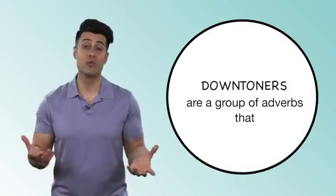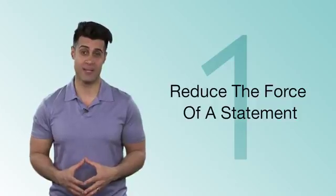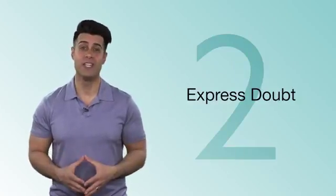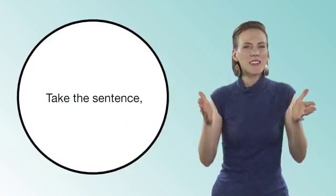Downtoners are a group of adverbs that, one, reduce the force of a statement, two, express doubt, or three, show imprecision. Take the sentence, the food is good, as an example.